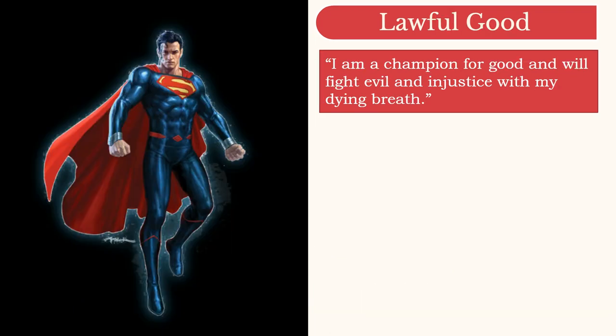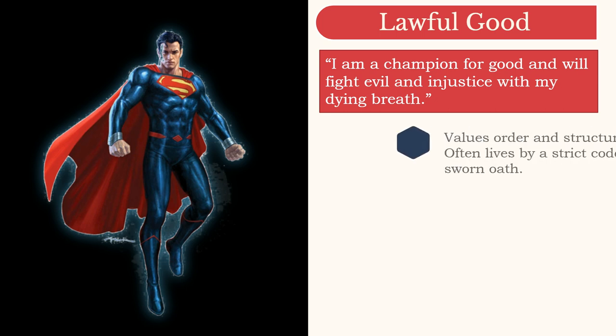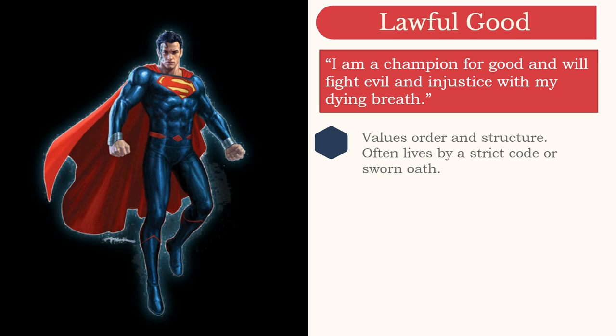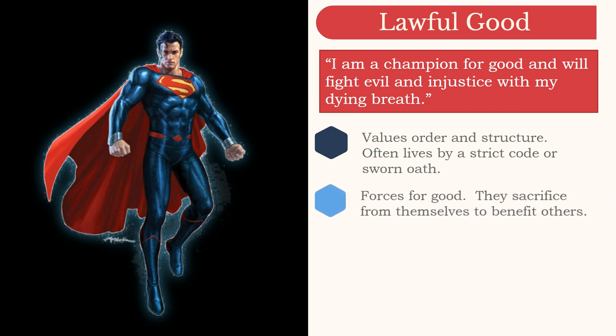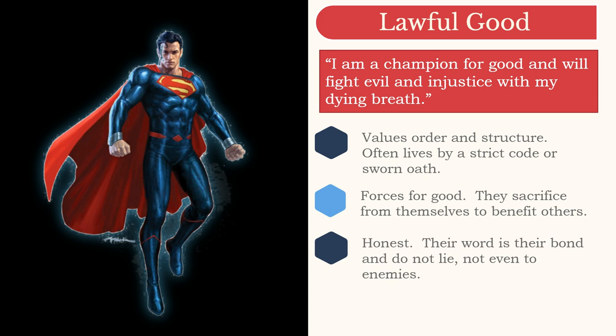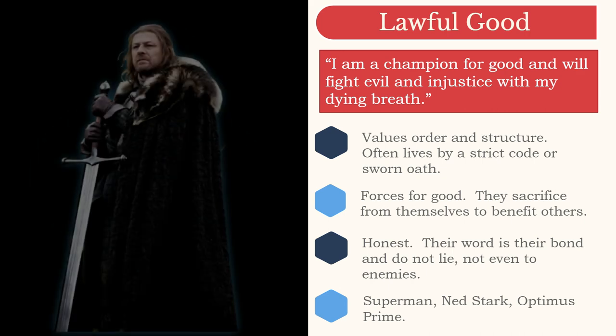Let's look at the nine alignments in turn, starting with lawful good. Lawful good characters value structure, order, and laws. They might have even sworn an oath to a church or a cause that they believe in. They are forces for good — willing to help those in need and protect the weak. Although they tend to obey authority, they always place goodness first and would not blindly follow rules if doing so would unjustly inflict harm on others. Lawful good characters are honest and trustworthy; their word is their bond, and they would avoid telling a lie even to an evil opponent. Examples include the fabled knights in shining armor, Superman, Ned Stark, or Optimus Prime.